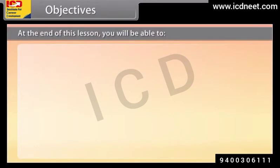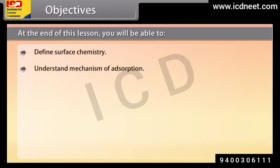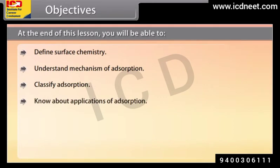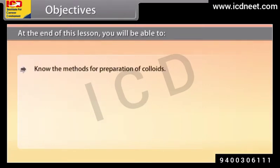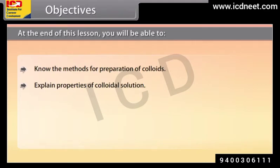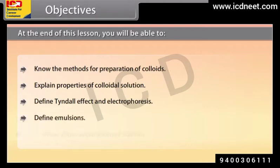At the end of this lesson, you will be able to define surface chemistry, understand the mechanism of adsorption, classify adsorption, know about applications of adsorption, define and classify catalysis, analyze mechanism of enzyme catalysis, define and classify colloids, know the methods for preparation of colloids, explain properties of colloidal solution, define Tyndall effect and electrophoresis, define emulsions, and know about applications of colloids.